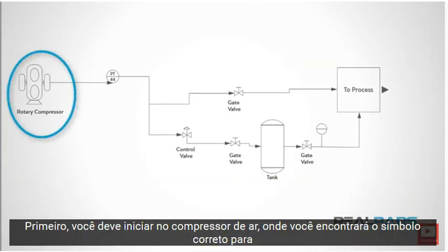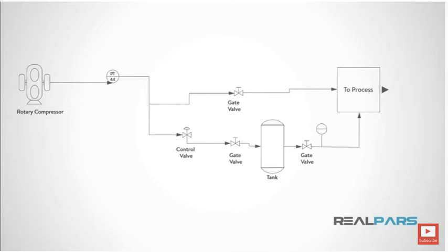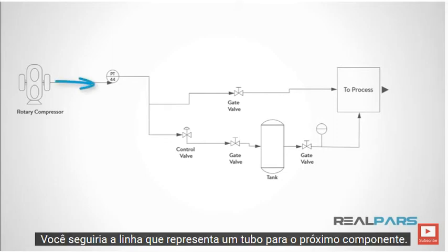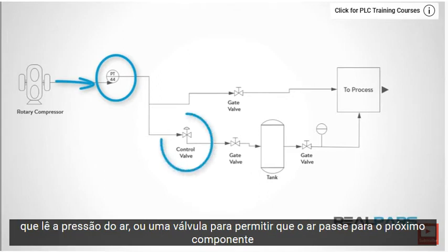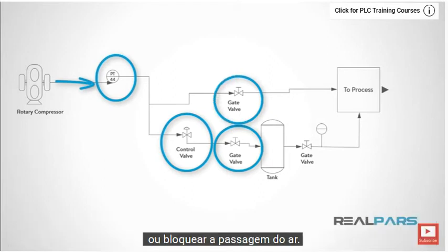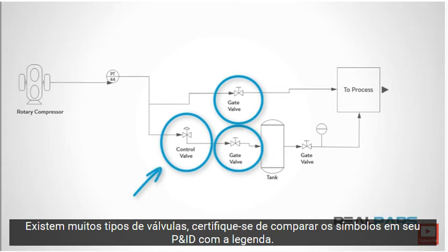First, you should start at the air compressor, which you'll find the correct symbol for on a legend of all symbols used. You would then follow the line, which represents a pipe, to the next component. In most cases, it will be some form of instrumentation, like a pressure transmitter or indicator that reads air pressure, or a valve to allow air to pass through to the next component or block the air from passing through. There are many types of valves, so be sure to compare the symbols on your P&ID to the legend.